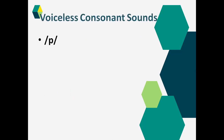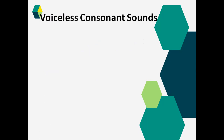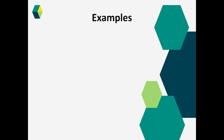Now, what are voiceless consonant sounds? There are nine. The first one is /p/, then /t/, then /k/, then /f/, /s/, /ʃ/, /tʃ/, /θ/, and /h/. So these are the nine voiceless consonant sounds.